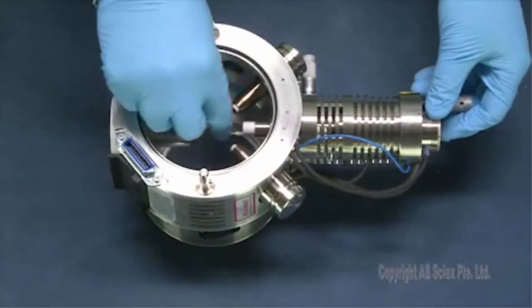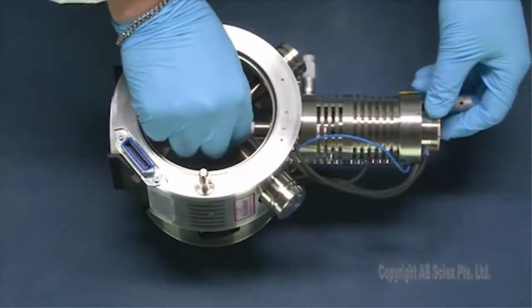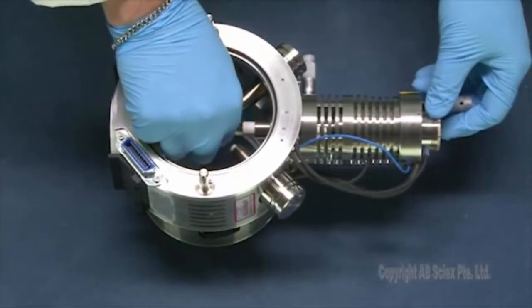Next, slide the Corona Discharge Needle through the sleeve and then out through the source exhaust cone.